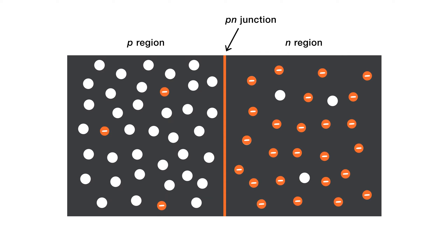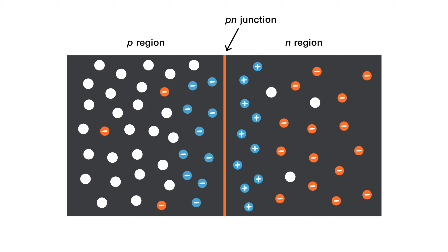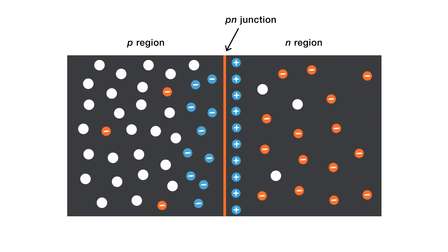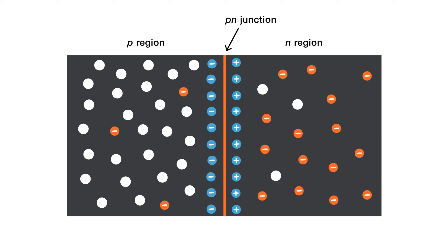When the p-n junction is formed, the free electrons in the n-region begin to diffuse across the junction and combine with the holes in the p-region near the junction. This makes the n-region lose free electrons and creates a layer of positive charges near the junction. As the free electrons combine with the holes in the p-region, the p-region also loses holes and creates a layer of negative charges near the junction.